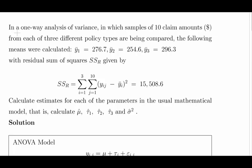We're not doing an ANOVA table in this one. In a one-way analysis of variance, an ANOVA in which samples of 10 claim amounts in dollars from three different policies — so there's three groups of 10, giving 30 observations — the following means occurred: Y-bar 1 = 276.7, Y-bar 2 = 254.6, and Y-bar 3 = 296.3. Those are the three group means.